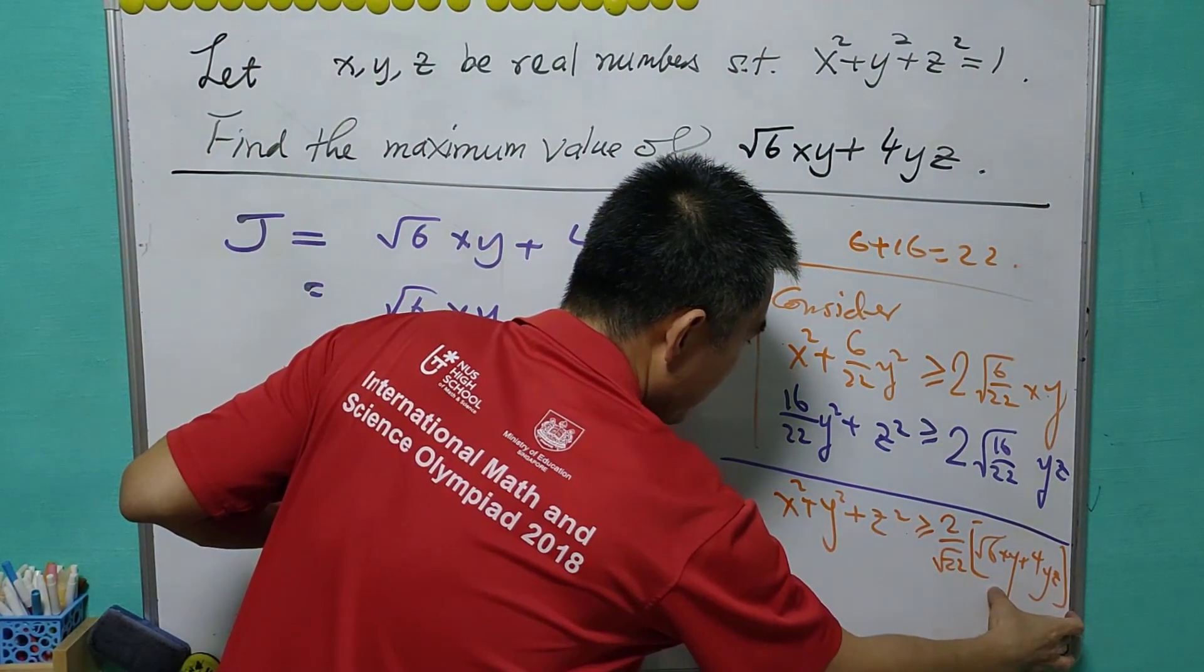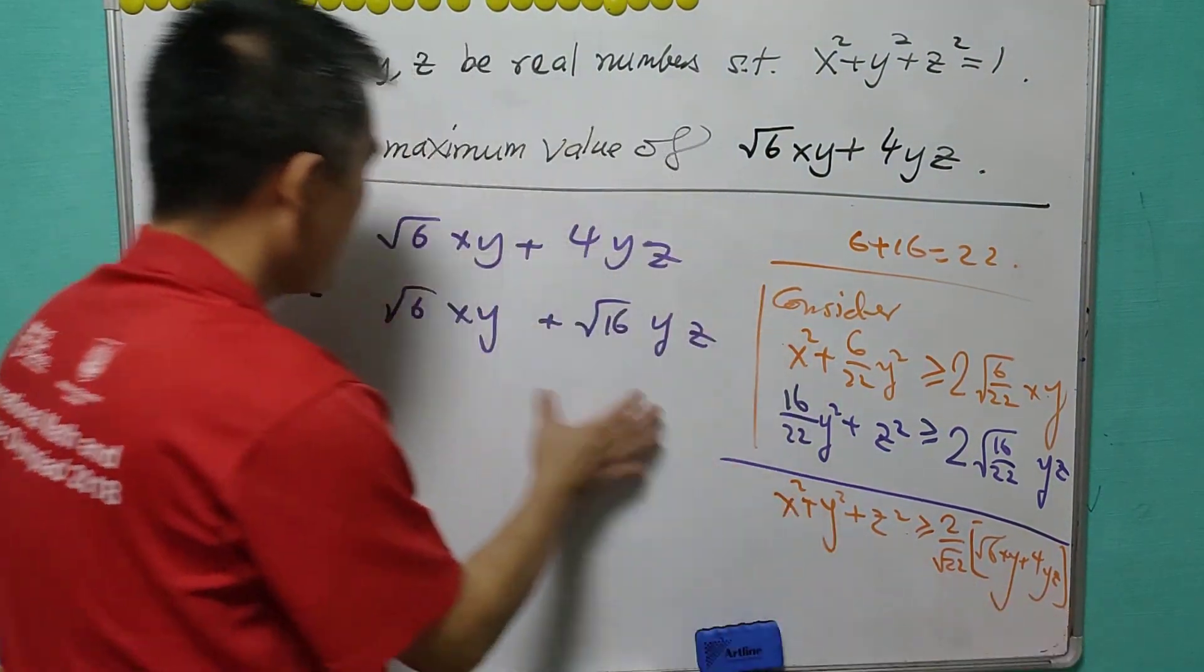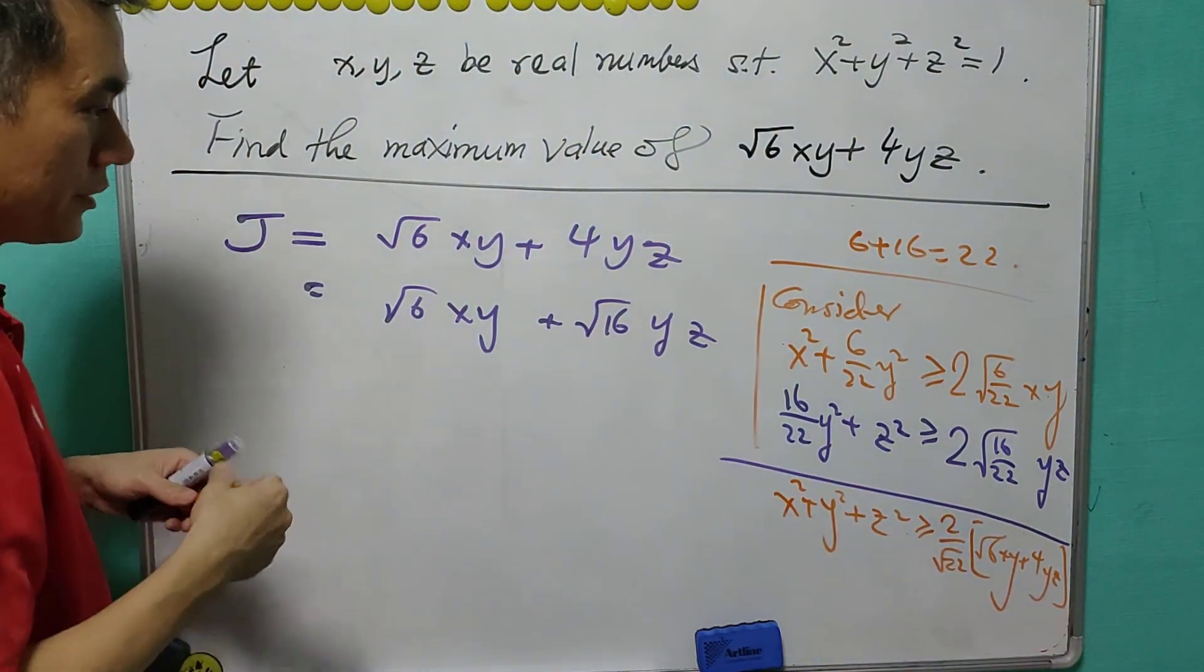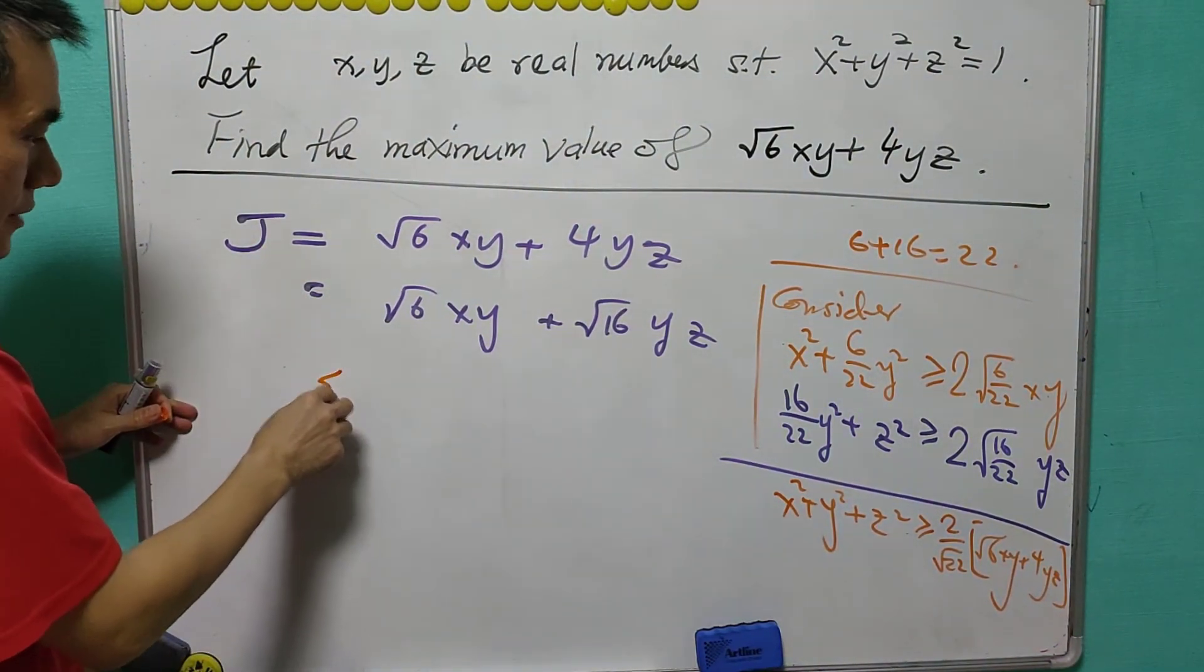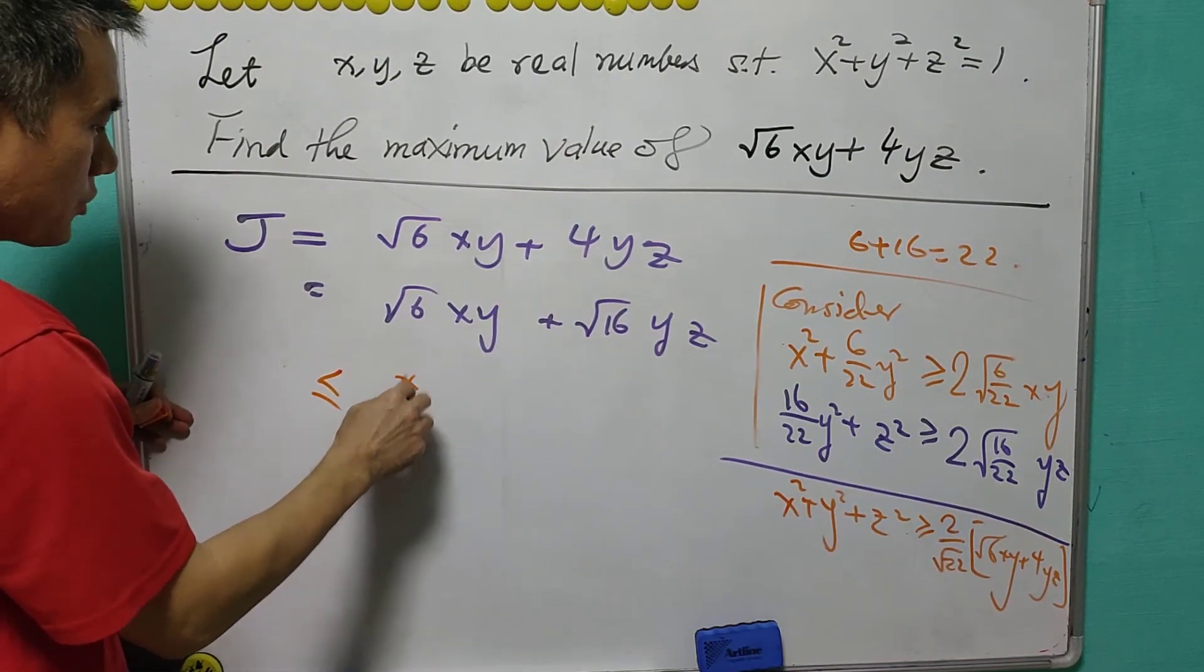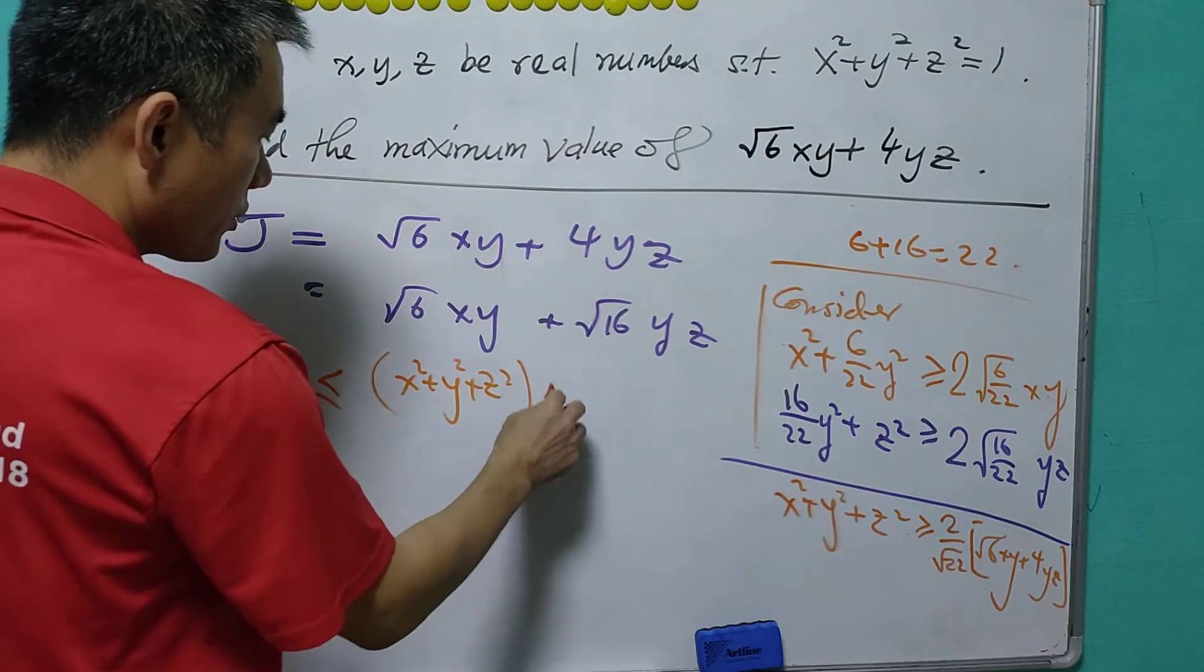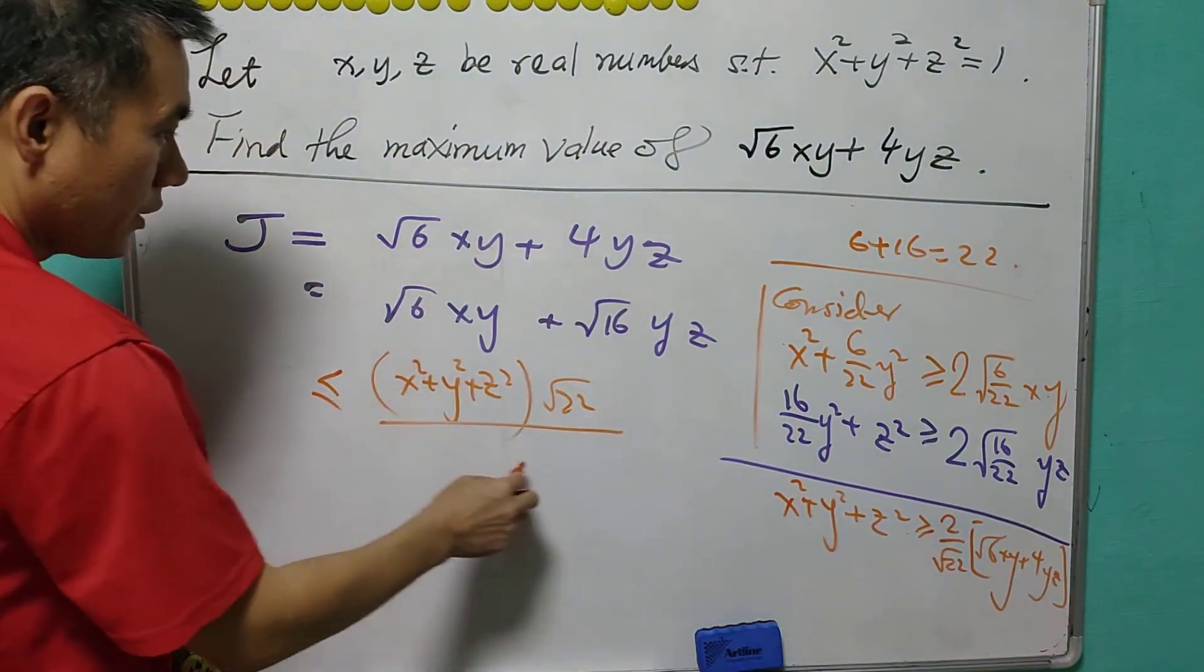This part of the expression on the right is exactly equal to J, and we'll see that this will be less than or equal to (x² + y² + z²) times √22/2.